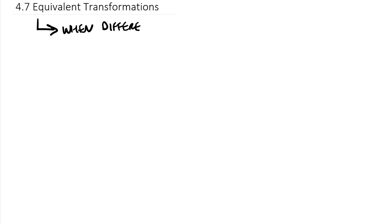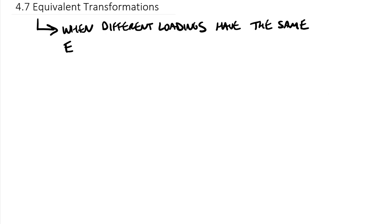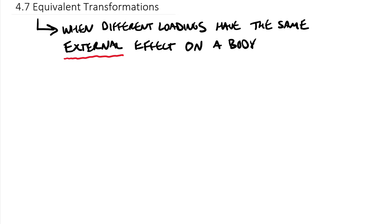Let's define equivalent transformations. This is when different loadings — keep in mind when I say loadings we mean combinations of forces and/or moments, so we lump all things together — have the same external effect on a body. One term I'd like to highlight is the word 'external.' For the vast majority of statics we are going to focus on external effects: external forces, external moments, external couples, external resolve forces — all things on the outside of a body.